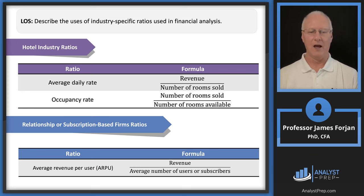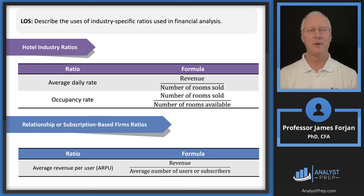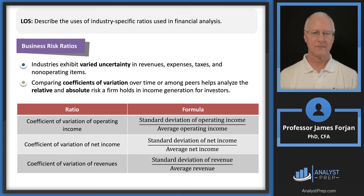Average revenue per user is another key metric. Hotels are a fascinating example of an industry where generating sustainable and consistent profit is challenging — some do and some don't.